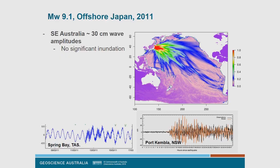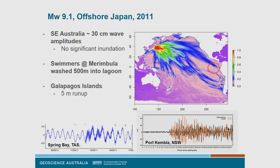The 2011 Japan tsunami was not well-oriented to affect Australia. In southeast Australia we had around 30 centimetre wave amplitudes with no significant inundation, though swimmers at Merimbula were reportedly washed into a lagoon due to fast currents enhanced by the tsunami. Still, this event reinforces that if you're unlucky and far away, you can suffer significant run-ups — there were five metres at the Galapagos Islands.